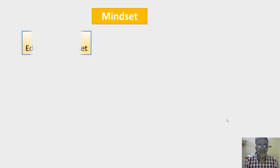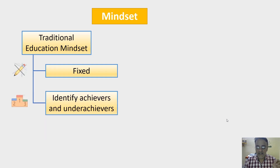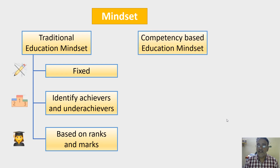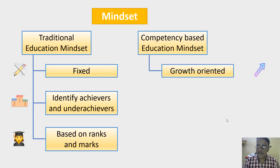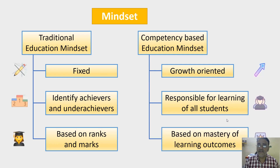Traditional education is based on a fixed mindset. It is practiced to identify achievers and underachievers in class based on their ranks or marks. In competency-based education, it is based on a growth-oriented mindset. It takes responsibility for all students in mastering learning outcomes. It is more responsive and commits to continuous improvement in performance, and it is completely based on mastery of the learning outcomes.